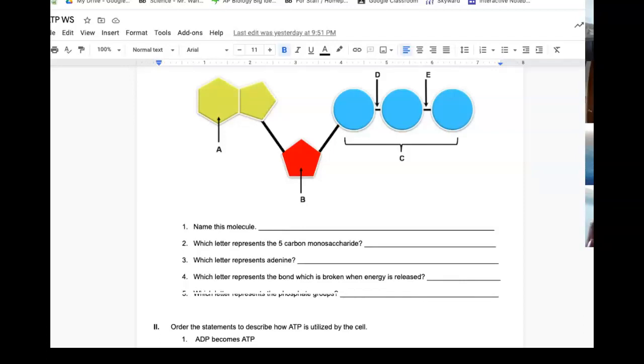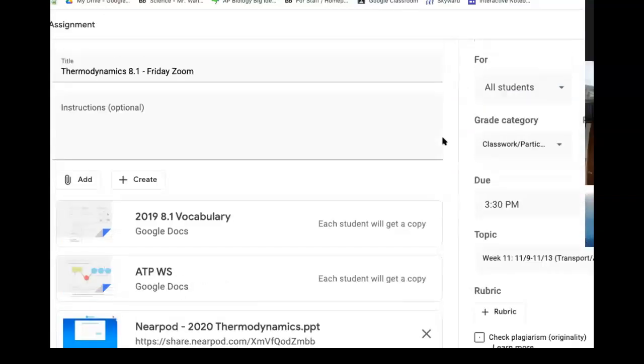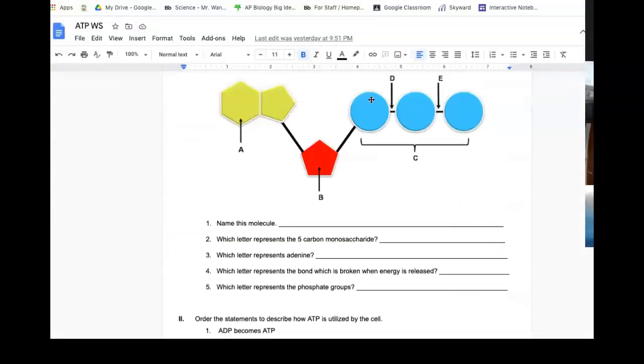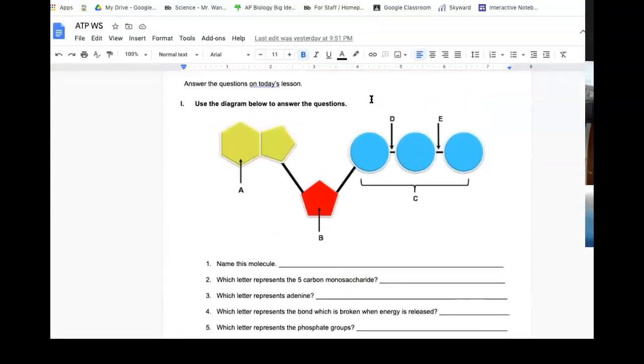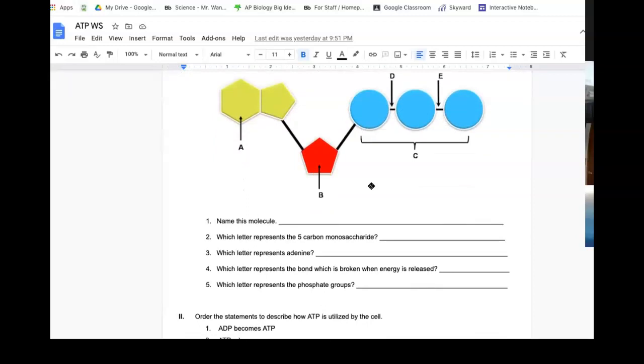Okay, so we're ready to go over that worksheet. Review of ATP. Okay, so this molecule you should have identified as ATP, adenosine triphosphate. So the question is, which letter represents the five-carbon molecule? So five carbons, five-sided object, makes a pentagon. So even if you didn't know that that was the sugar, you might have guessed based on the fact that it has five sides. So this is ribose, letter B.